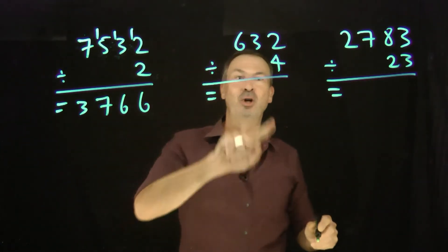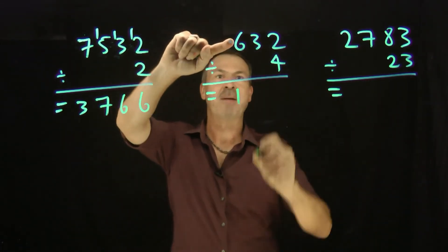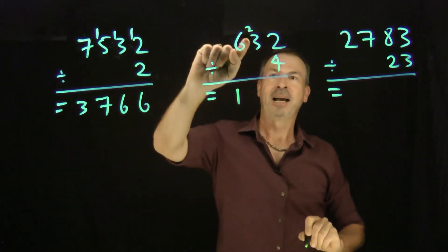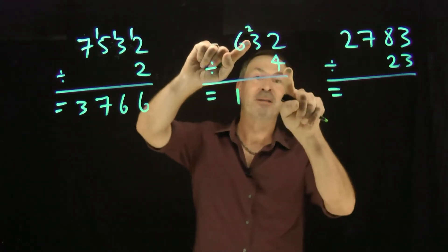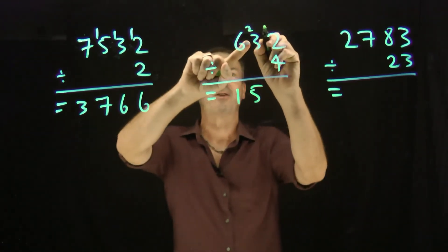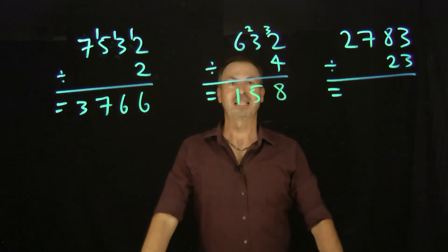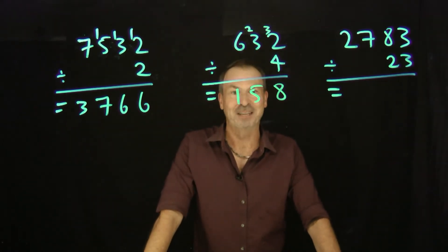Here goes. 632 divided by 4. First digit. How many times does 4 go into 6? One time and there will be 2 left over. OK. 23. Think 23 now. How many times does 4 go into 23? I'm thinking 5 times. That's 5, 4 is 20 with 3 left over. And how many times does 4 go into 32? 8 times. 632 divided by 4 is 158. Whoa!